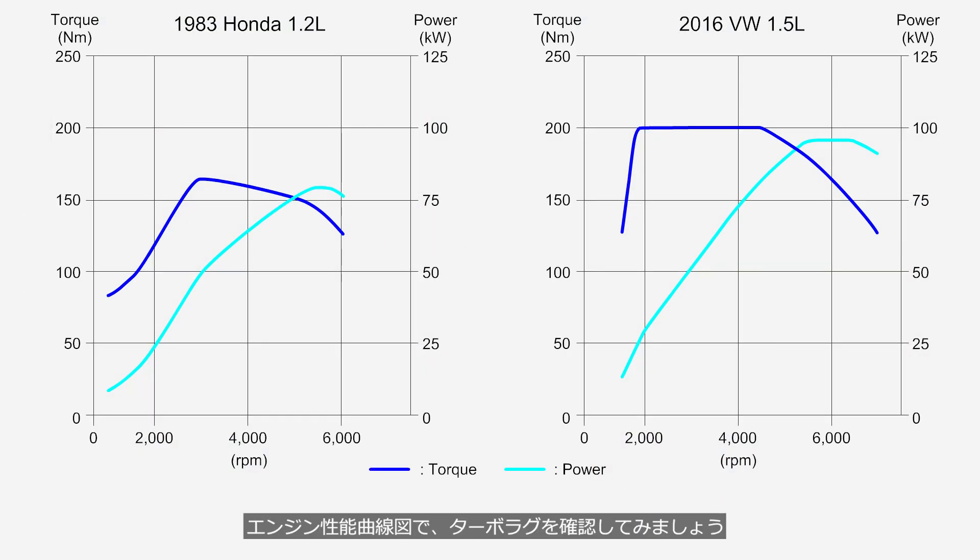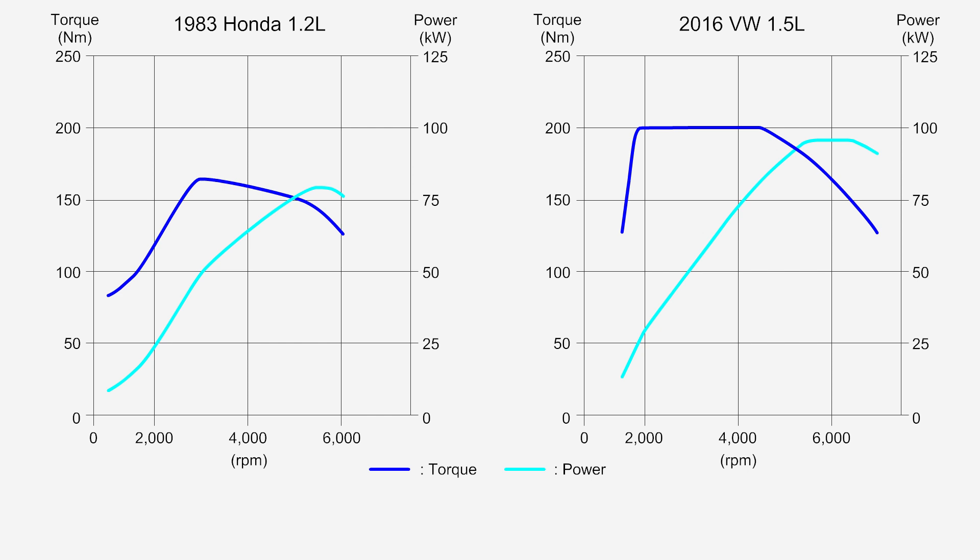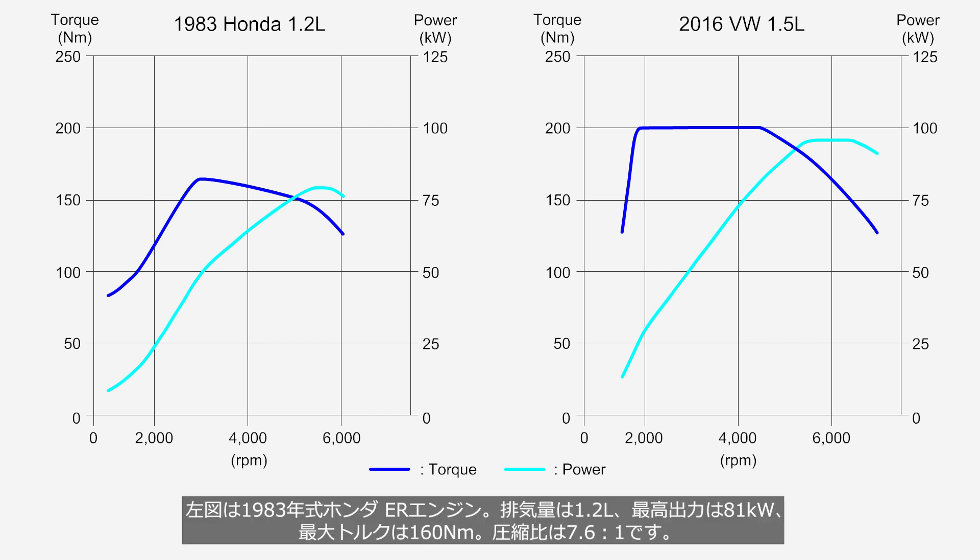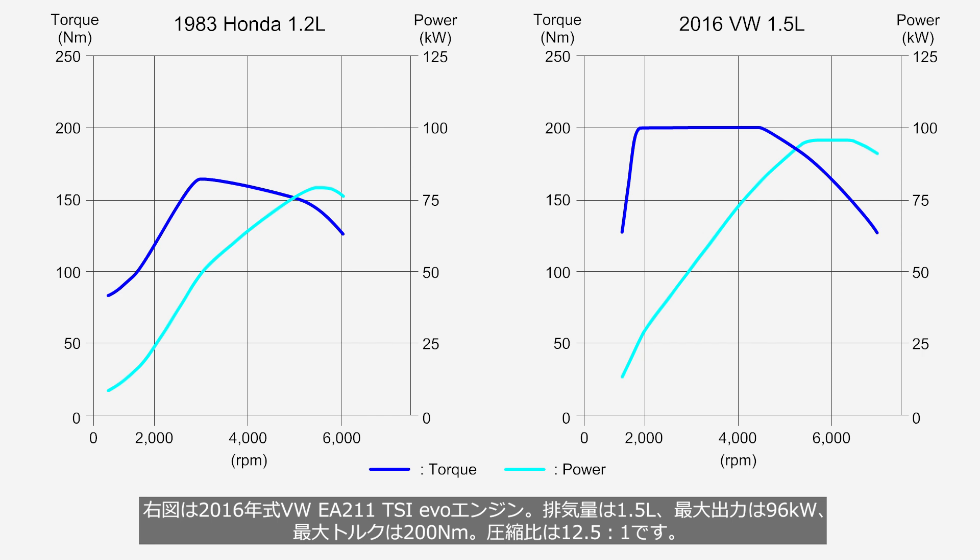Let's check for turbo lag on the engine performance curve chart. The chart on the left shows the 1983 Honda ER engine, with a displacement of 1.2 liters, a maximum power output of 81 kilowatts, a maximum torque of 160 newton meters, and a compression ratio of 7.6 to 1. The chart on the right shows the 2016 Volkswagen EA211 TSI Evo engine, with a displacement of 1.5 liters, a maximum power output of 96 kilowatts, a maximum torque of 200 newton meters, and a compression ratio of 12.5 to 1.